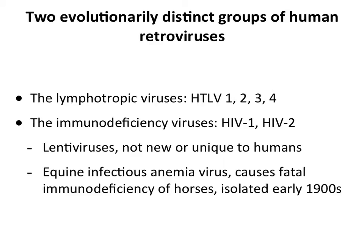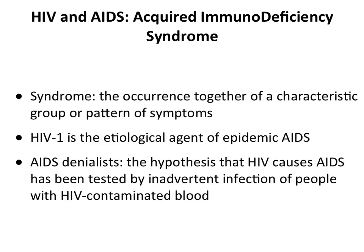Lentiviruses were already known to exist. The human T-lymphotropic viruses (HTLV 1, 2, 3, and 4) are a distinct genus from the immunodeficiency viruses HIV-1 and HIV-2. There are other lentiviruses - in fact, equine infectious anemia virus was isolated in the early 1900s and causes immunodeficiency in horses, and this plays a big role in understanding where HIV came from.